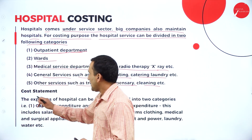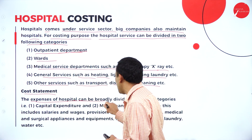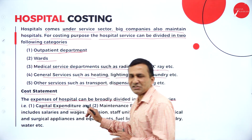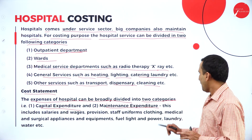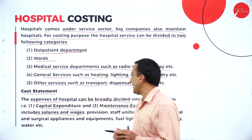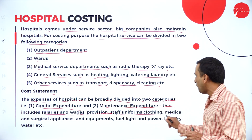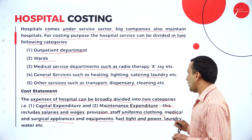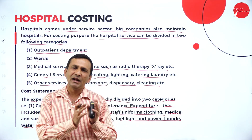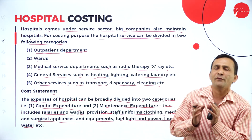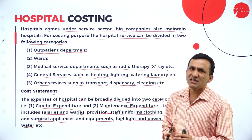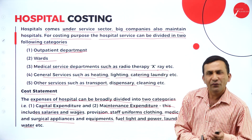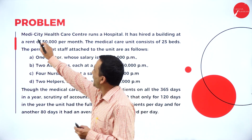Under hospital costing and the cost statement, the expenses of a hospital can be broadly divided into two categories: capital expenditure items and maintenance-related expenditure. This includes salary and provisions, staff uniform and cloth, medical and surgical appliances and equipment, fuel, light and power, laundry, water, and salary for the various persons involved in hospital operations. We need to track costs based on fixed as well as variable categories.